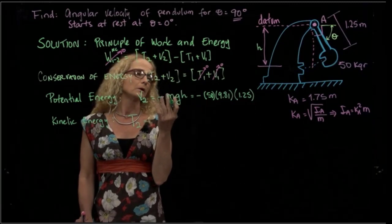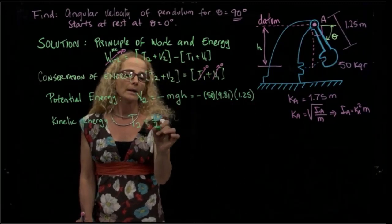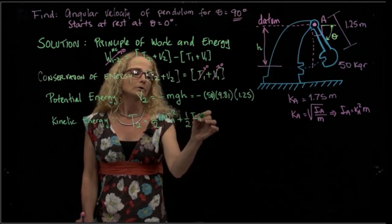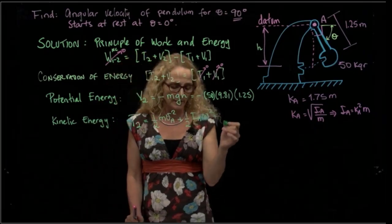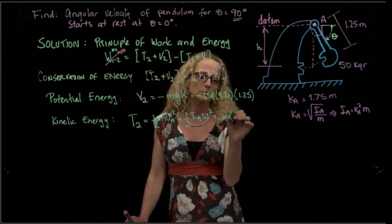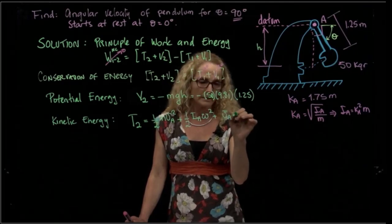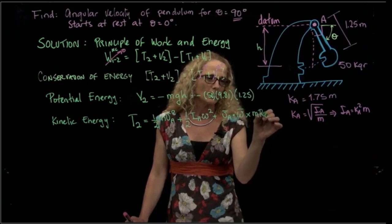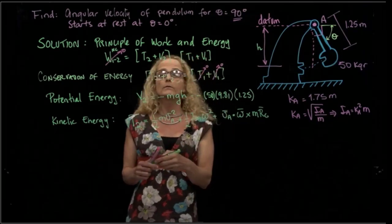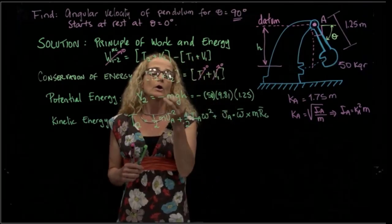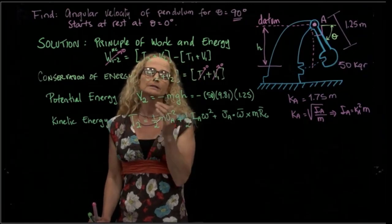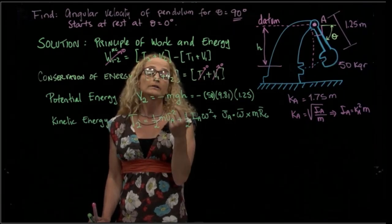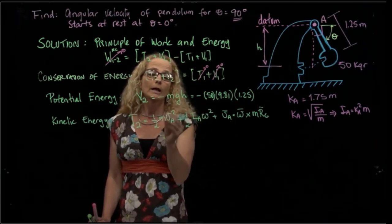So we will calculate the kinetic energy with respect to point A. And as you remember, the equation to calculate that is one-half mass velocity A squared plus one-half moment of inertia angular velocity squared plus that term that usually is zero because we always choose a point that has velocity zero. So this is the complete formula to calculate the kinetic energy with respect to a point. Remember that the kinetic energy is a scalar value, so it doesn't matter where you calculate it from, you will get the same value. However, it's very important that if you use point A, you use point A in the three terms.